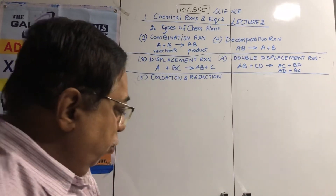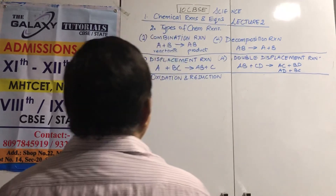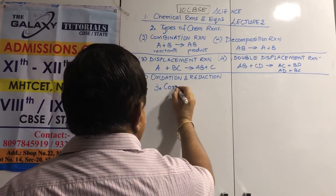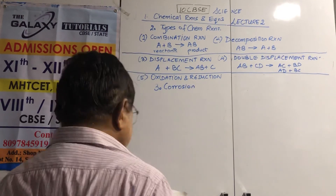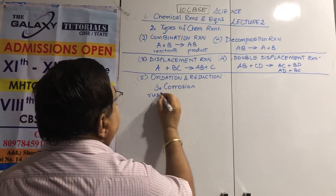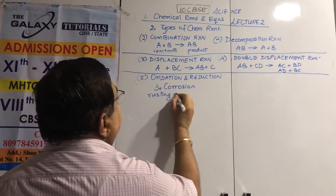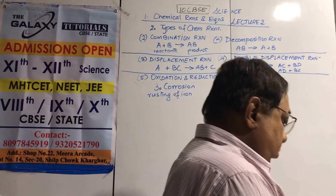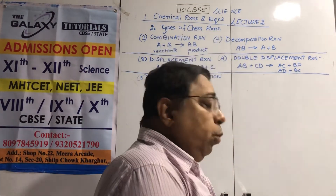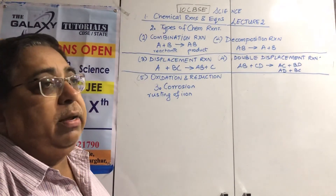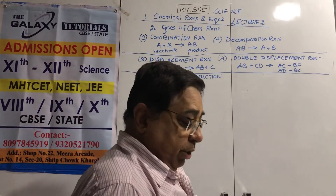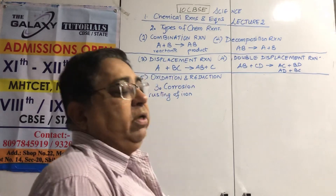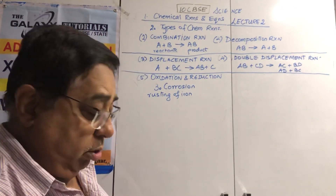We have two small paragraphs left. First, corrosion — a chemical process. The most common example is rusting of iron. When a metal is attacked by the environment such as moisture, acids, etc., we say it corrodes. This process is called corrosion.